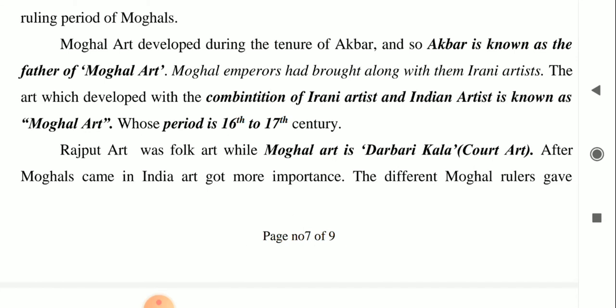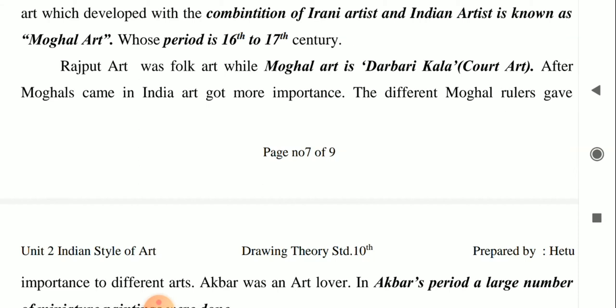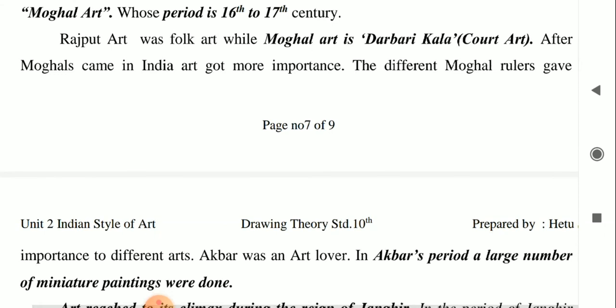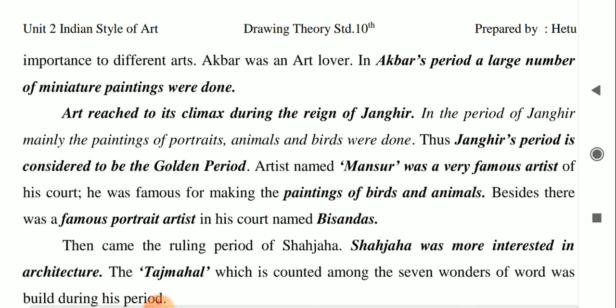The rich elements of Indian art and Irani art combined with each other and a new type of art was formed during the tenure of Akbar — that is why Akbar is known as the father of Mughal art. The period of Mughal art is the 16th to 17th century. Rajput art was folk art while Mughal art is Darbarikala, or court art. After Mughals came to India, art got more importance, and in Akbar's period a large number of miniature paintings were done.